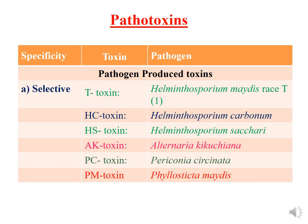Pathotoxins are broadly classified into selective, non-selective, and those produced during host-pathogen interaction. The selective toxins include: T toxin, produced by Helminthosporium maydis race T; HC toxin, produced by Helminthosporium carbonum; HS toxin, produced by Helminthosporium saccharinum; AK toxin from Alternaria kikuchiana; PC toxin from Periconia circinata; and PM toxin from Phyllosticta maydis. These selective toxins are produced specifically when the pathogen infects its particular host plant.